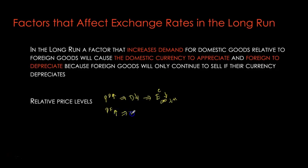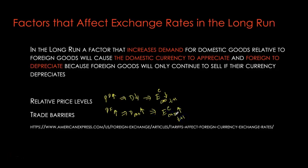Alternatively, if the foreign price level goes up, demand for their goods is going to go down, and demand for Canadian goods — which are now relatively cheaper — will go up. As demand for our goods goes up, the exchange rate for the Canadian dollar is expected to appreciate in the long run. Then we have trade barriers: the higher the level of trade barriers, the higher will be the demand for domestic goods, because domestic residents are forced to buy more made-in-Canada goods. So trade barriers will increase demand for goods produced at home and cause the Canadian dollar to appreciate.